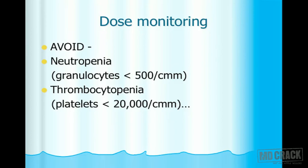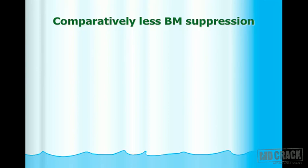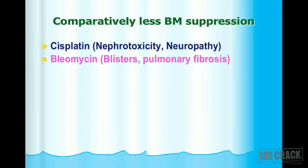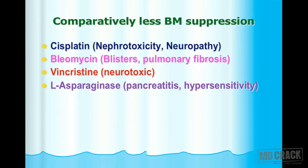For thrombocytopenia, we watch the platelet count and should avoid it falling below 20,000 per cubic millimeter. The five comparatively less bone marrow toxic drugs are: cisplatin, bleomycin, vincristine, L-asparaginase, and prednisone — these are shown on the slide.